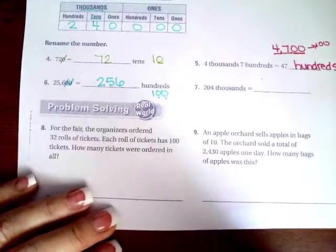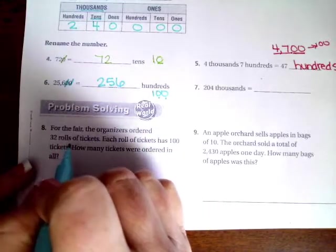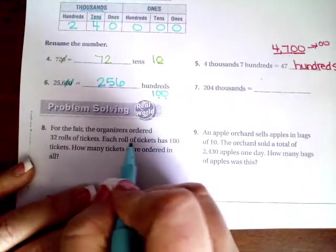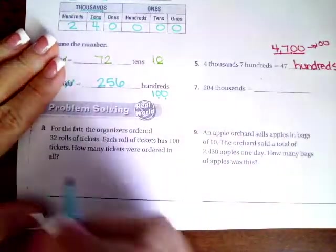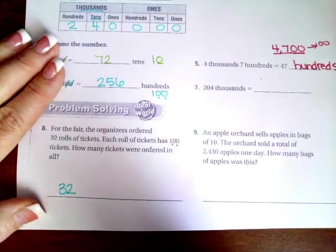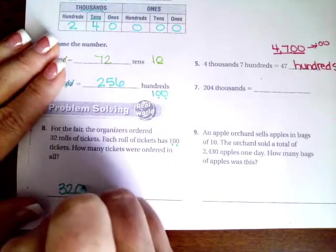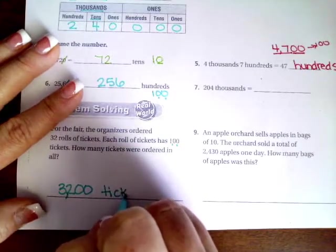We're gonna go down and do number eight. For the fair, the organizers ordered thirty two rolls of tickets. Each roll of tickets had a hundred tickets. How many tickets were ordered in all? So we have our thirty two, each one has a hundred. How many zeros in a hundred? Two zeros. I'm gonna put two more zeros. Three thousand two hundred tickets. Word problem, word answer.